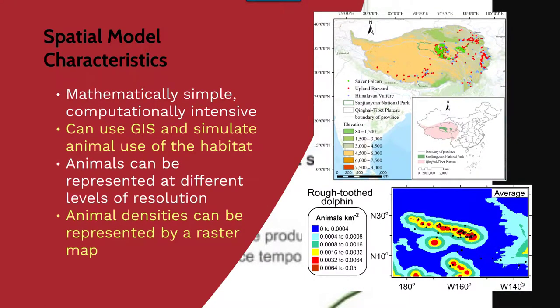Spatial model characteristics include the fact that they are mathematically simple yet computationally intensive. You can use GIS and simulate animal use of habitat, and animals can be represented at different levels of resolution. Densities can be represented by a raster, as in the figure to the bottom right with the rough-toothed dolphin. These spatial models can serve as a powerful tool for understanding populations and metapopulations.